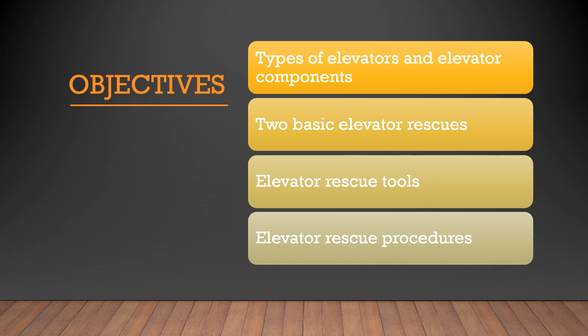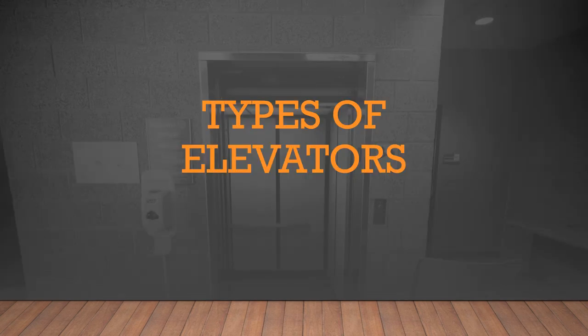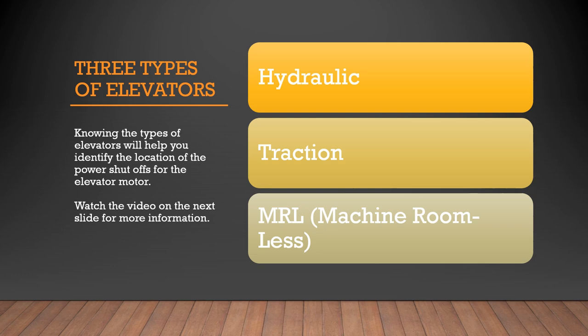This is Dave Reynolds from the training division. Thanks for taking part in this learning about basic elevator rescue. Most of these slides will advance automatically except for those with video. Review the slide identifying the three types of elevators, then watch the video on the next slide. After the video, discuss with your crew what are the three types of elevators and where you would find their power shutoffs. It will be useful to take the information from this training and look at elevators in your area.